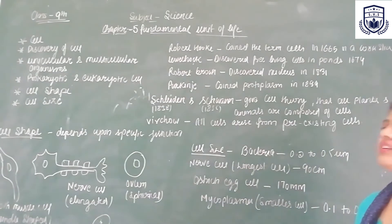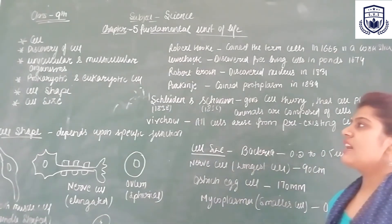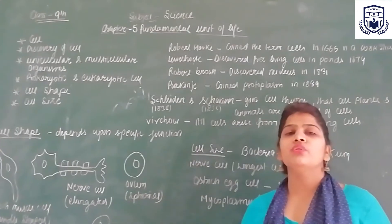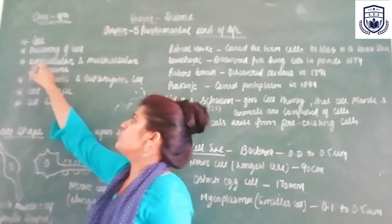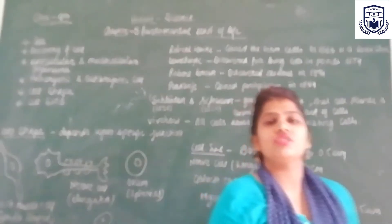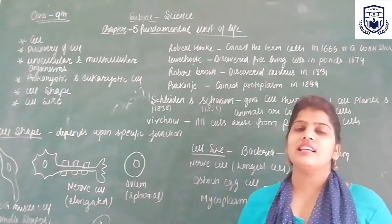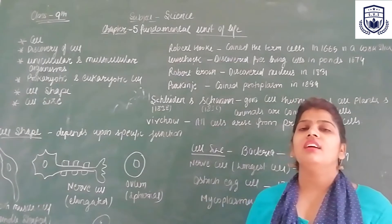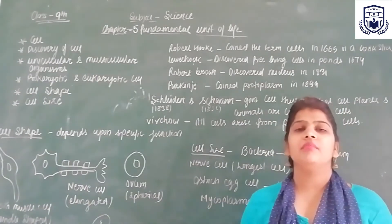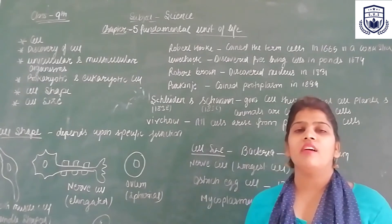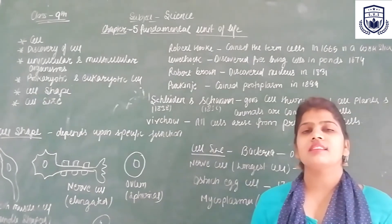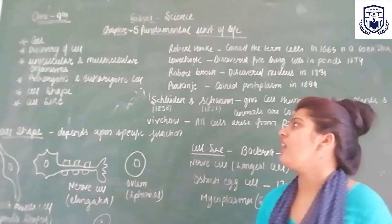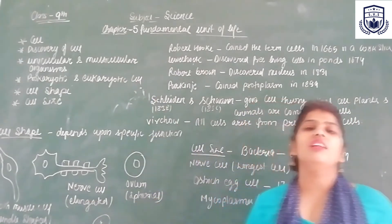यह थी discovery of cell। Next आता है unicellular और multicellular organism। Uni मतलब single — ऐसे organisms जो single cell से बने हों, उन्हें हम unicellular organism कहते हैं। Multi मतलब many — ऐसे organisms जो many cells से मिलकर बने हों, उन्हें multicellular organism कहते हैं।